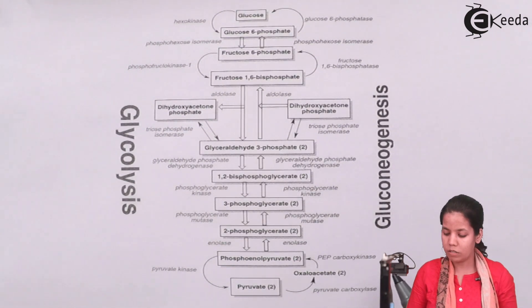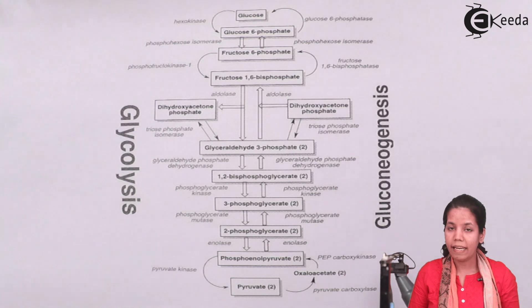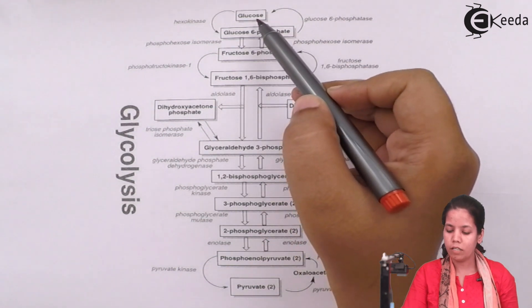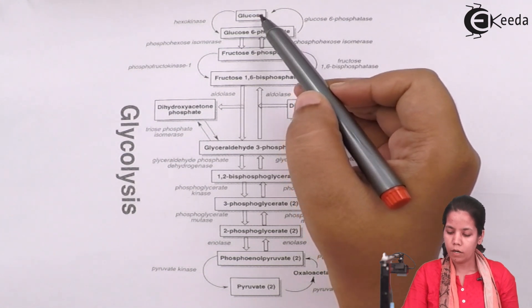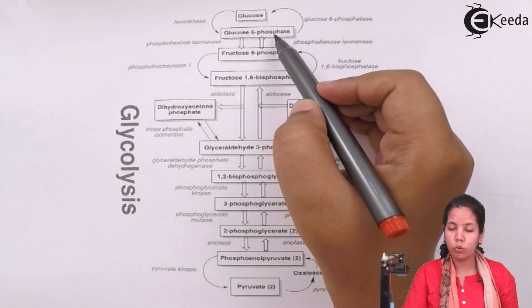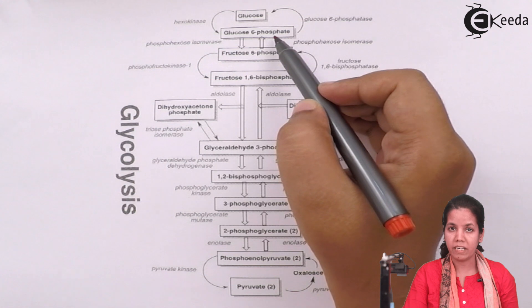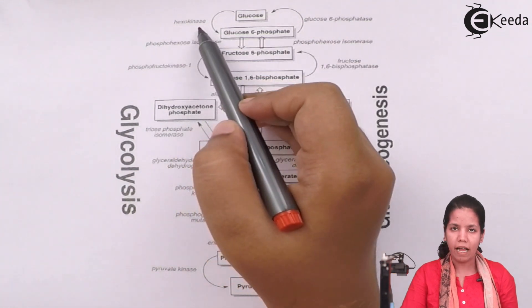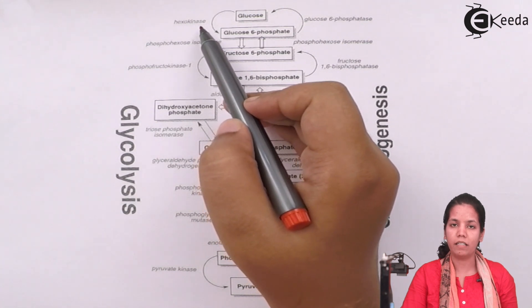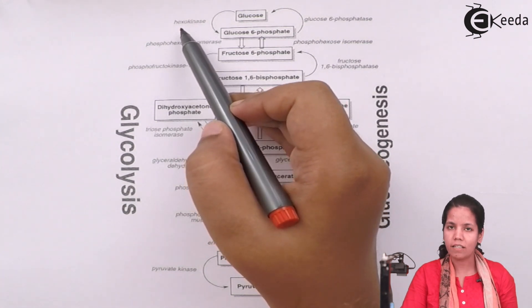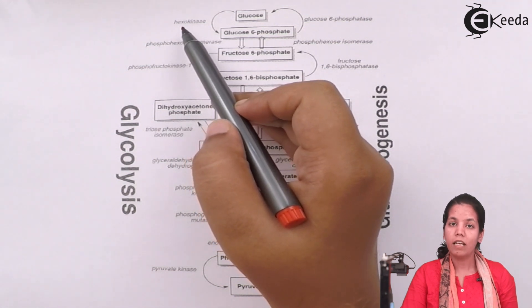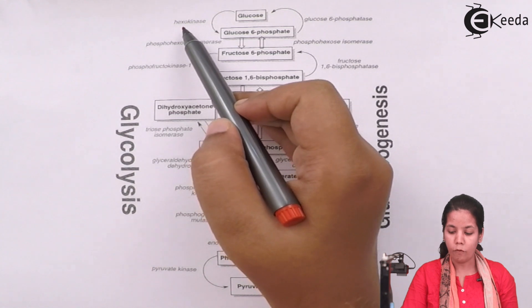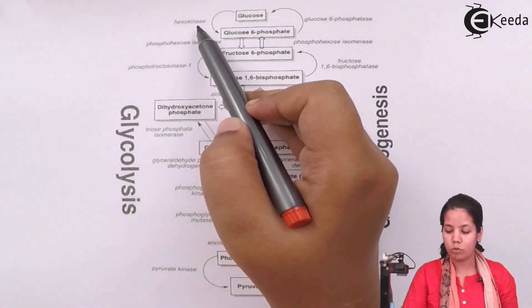This is the actual cycle of glycolysis. The first molecule used is glucose, which is produced from photosynthesis. In the first step, glucose is converted to glucose-6-phosphate, meaning one additional phosphate is added to glucose. The enzyme used here is hexokinase. 'Kinase' means the enzyme has the ability to add a phosphate molecule, and 'hexo' refers to the 6 carbons of glucose.